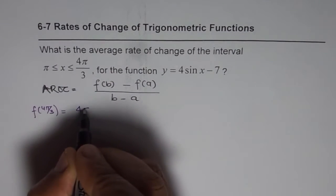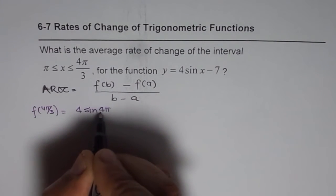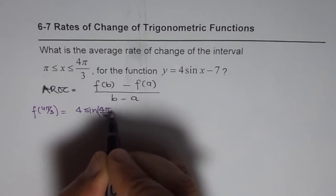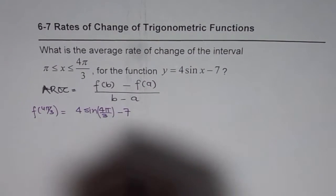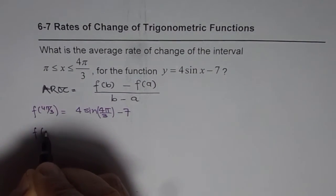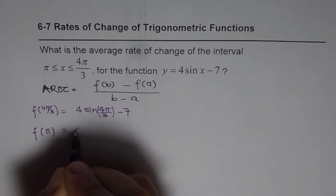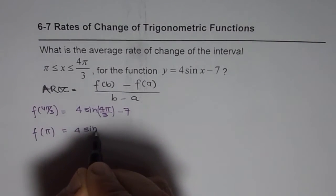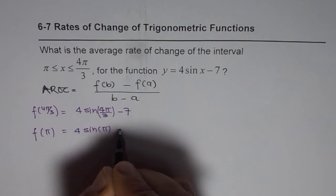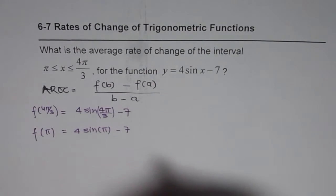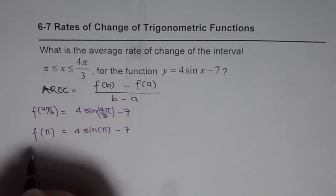So we get 4 sin(4π/3) - 7 and then we will see what is the value of the function at π which is 4 sin π. We know 4 sin π should be 0 minus 7.